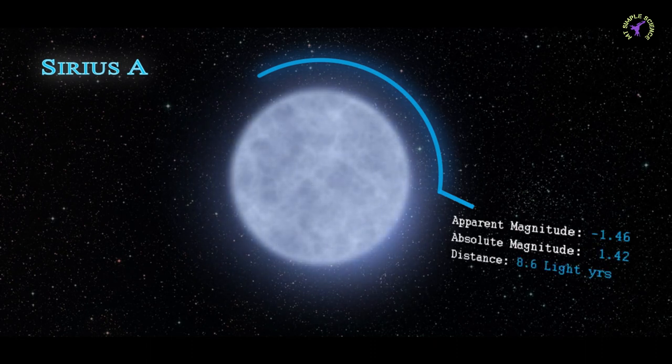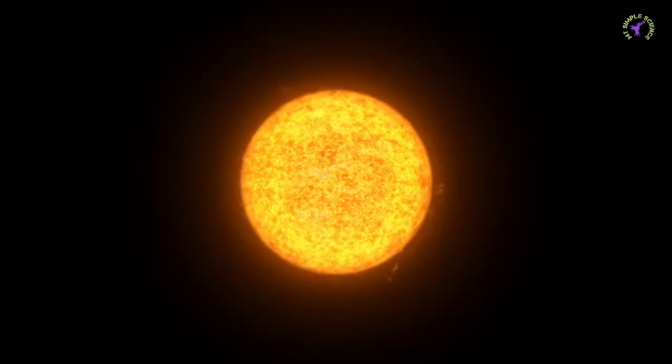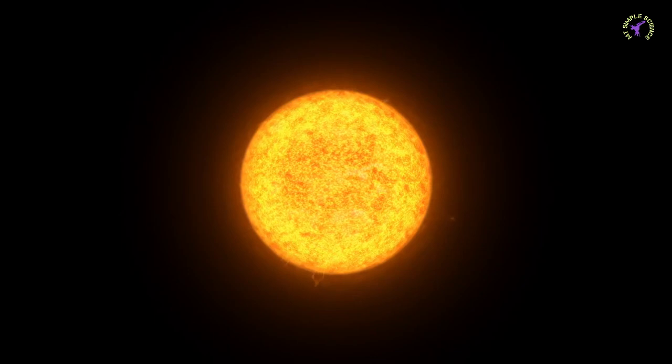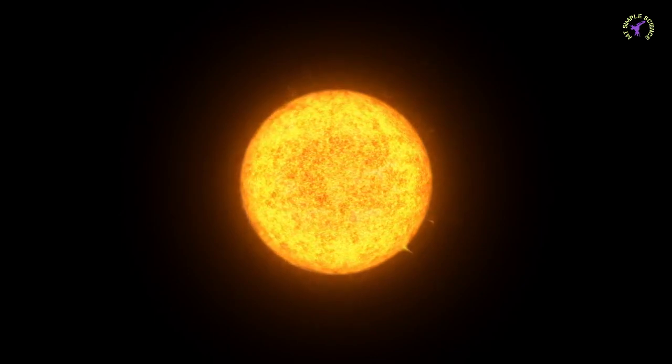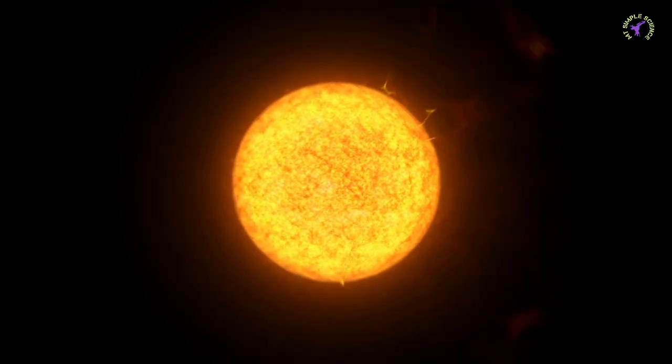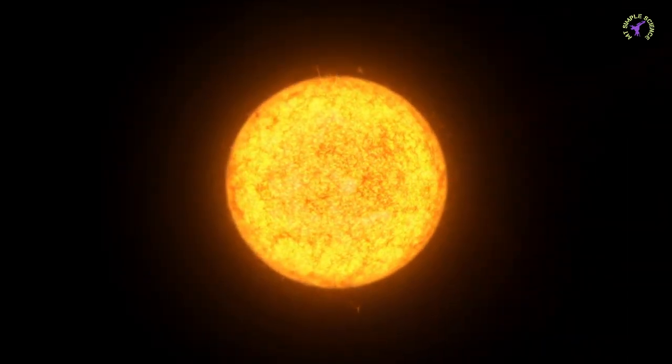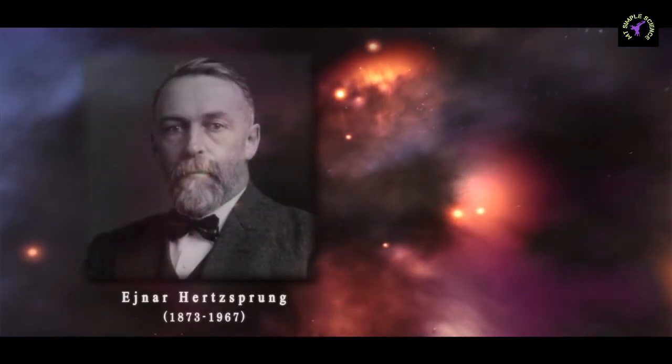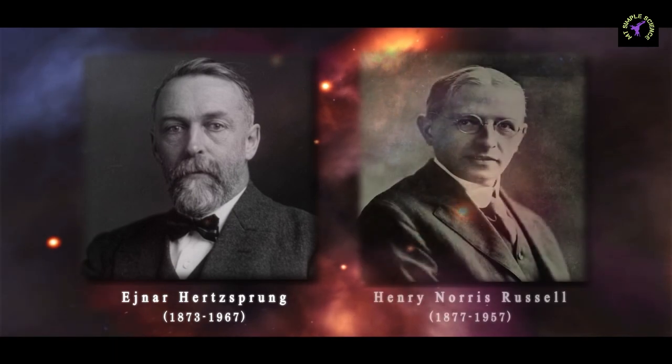Two things are very necessary to know about any star: the temperature of the star and its distance from us. By knowing these two things, we can measure its size. Also, how much energy that star is giving off—its luminosity—can be calculated easily. In 1910, Ejnar Hertzsprung and Henry Russell created a diagram which was a major step towards stellar evolution.